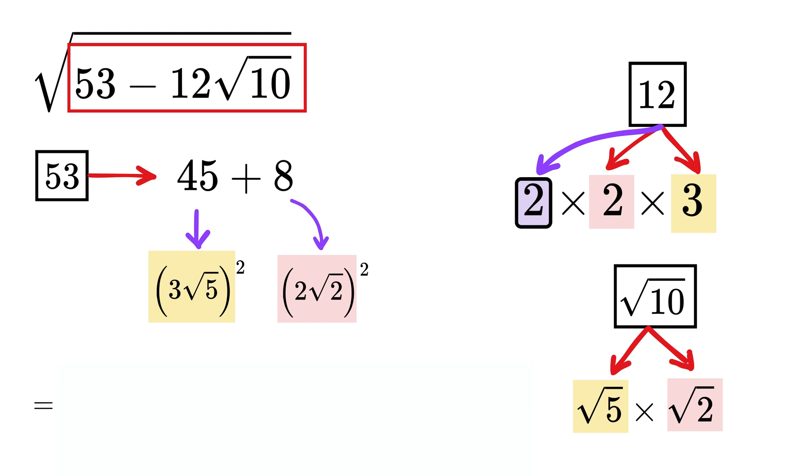So we can rewrite this 53 minus 12 root 10 as 3 root 5 squared plus 2 root 2 squared minus 2 times 3 root 5 times 2 root 2.